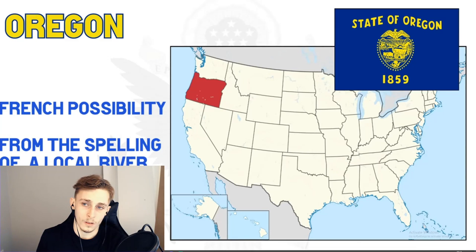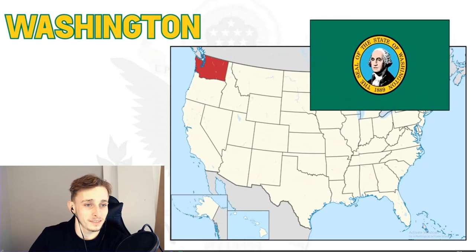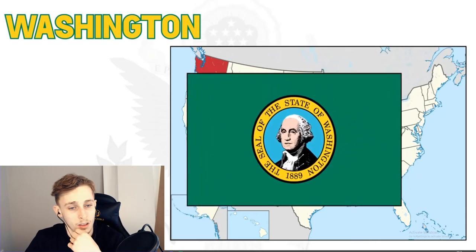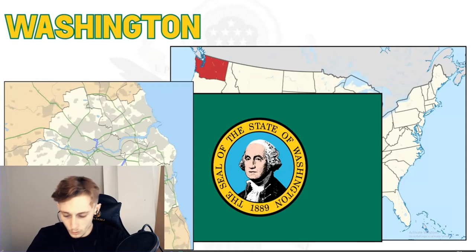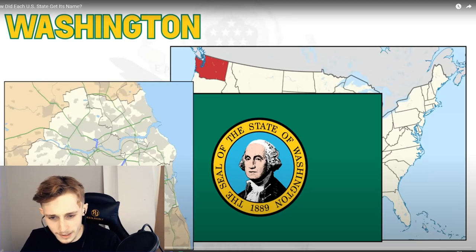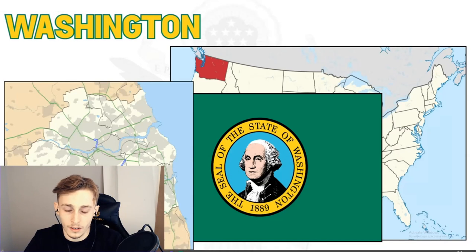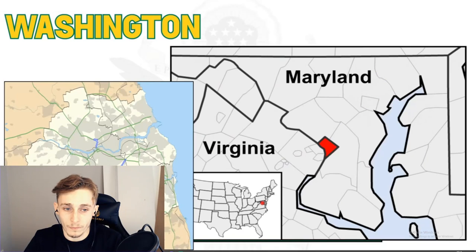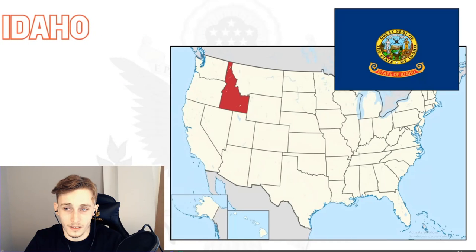The state of Washington is pretty straightforward — just look at the flag. It's named after George Washington, whose surname in turn derived from the town of Washington in the historic county of Durham, England. The territory was originally going to be named Columbia after the Columbia River, but they found it too similar to the District of Columbia, which itself contains a city named Washington. Washington became the only state named after a US president.